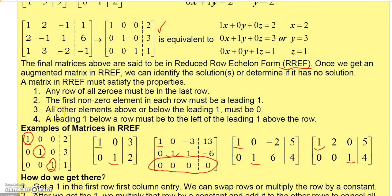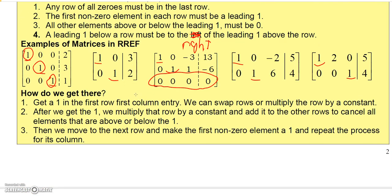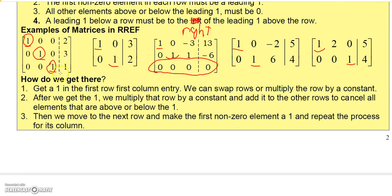The final condition is that a leading one in a lower row must be to the right of the leading one in the row above it. If you follow the proper steps, all of these conditions will be satisfied automatically — you don't need to check them separately.